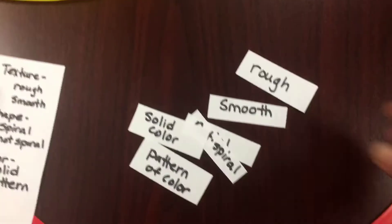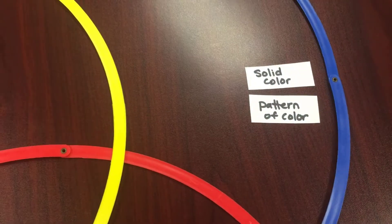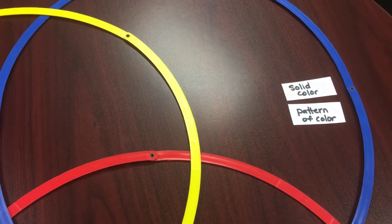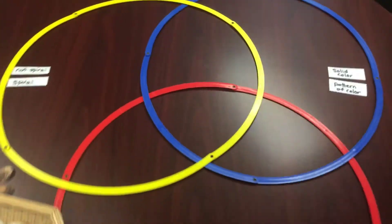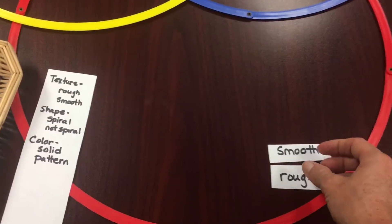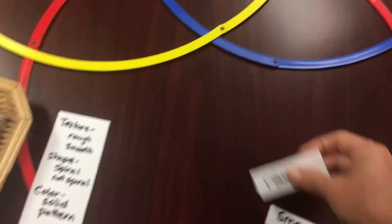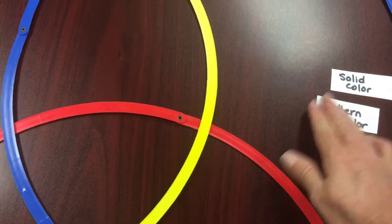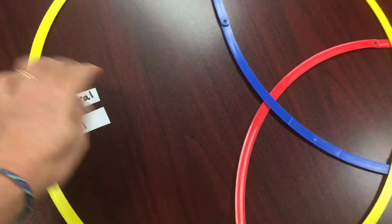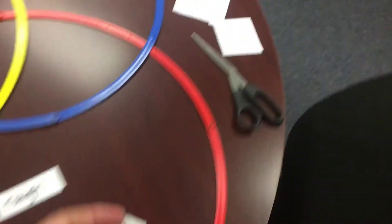I'm going to cut these out: rough, smooth, spiral, not spiral, solid color. For rough and smooth, I'm going to put these together because I can only pick one. For solid color or pattern of color, I'm going to put those together because I only pick one of those. Remember, if we put solid color in one and pattern of color in another, we won't have anything in the middle. I'm going to pick the ones that are rough in this one, then I want a pattern of color here, and I think I want everything that is spiral over here.